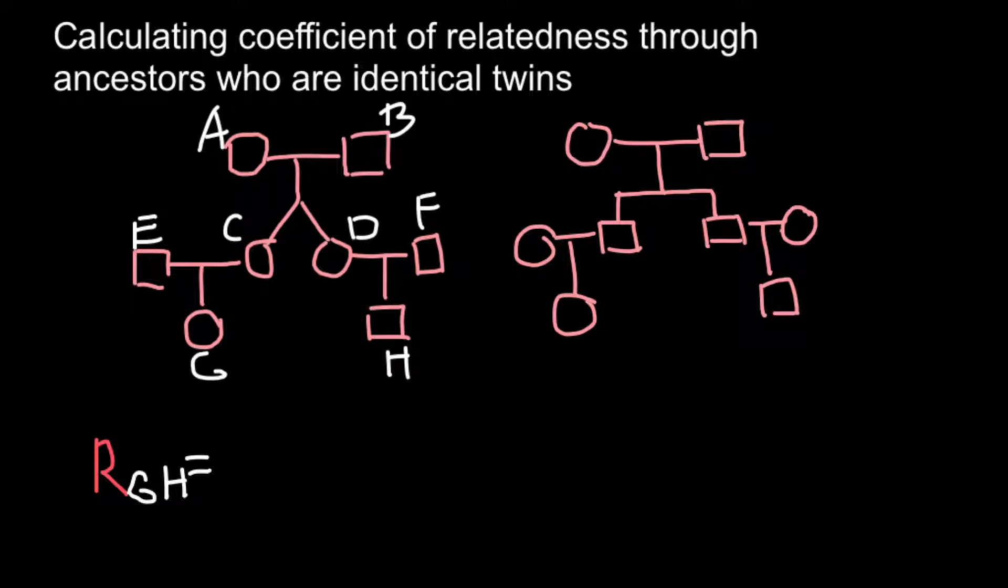Two siblings here, each would marry and have also their own child. Now we also have to calculate coefficient of relatedness here for individuals. Once again this is going to be A, B, E, C, D, F, G, and H.